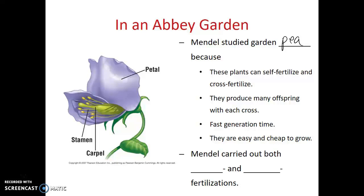With these organisms, Gregor Mendel carried out both self and cross-fertilizations. Pea plants are hermaphroditic — they produce both male and female gametes in a single flower, and they're capable of self-fertilizing. The pollen from a flower can fertilize itself, resulting in a pea pod filled with seeds or offspring.